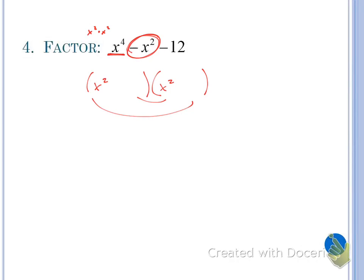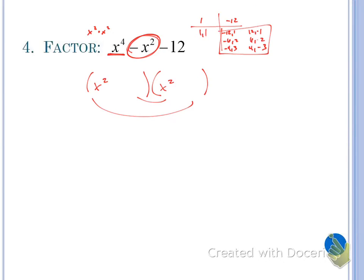Our game is the same. The lead coefficient is 1, so we factor it as 1 and 1. We need factor pairs of negative 12: negative 12 and 1, negative 6 and 2, negative 4 and 3, then 12 and negative 1, 6 and negative 2, and 4 and negative 3. We multiply our factor pairs together and try to add to negative 1. Since multiplying by 1 doesn't change anything, we just look for which pair adds to negative 1. Obviously it's negative 4 and positive 3, so we get (x squared minus 4)(x squared plus 3).